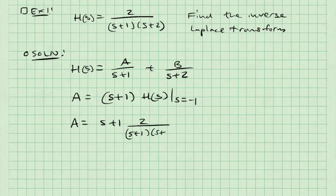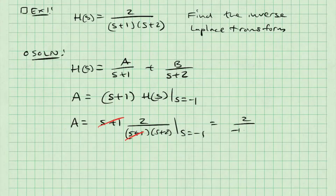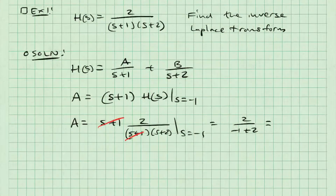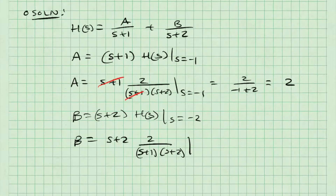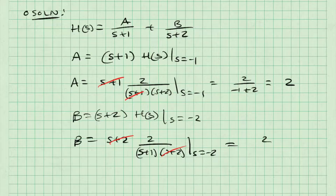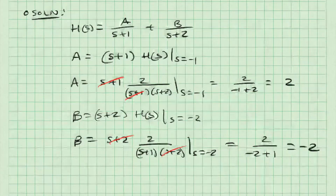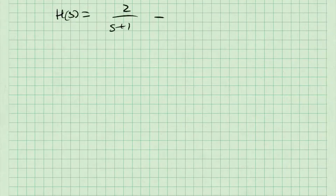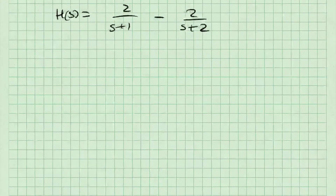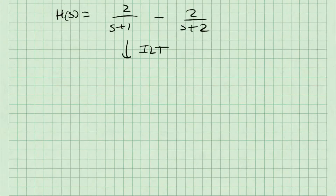I evaluate this when S equals negative 1. S plus 1 cancels with S plus 1, so A is equal to 2 over (negative 1 plus 2), which is just equal to 2. B is equal to S plus 2 multiplied by H of S, evaluated when S equals negative 2. S plus 2 cancels with S plus 2, and B is equal to 2 over (negative 2 plus 1), which is equal to negative 2. The result of this partial fraction expansion is that H of S equals 2 over S plus 1, minus 2 over S plus 2. But I also need to take the inverse Laplace transform.